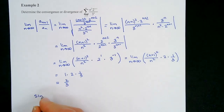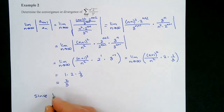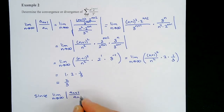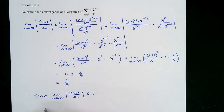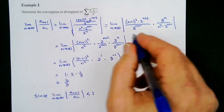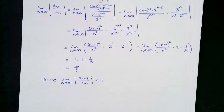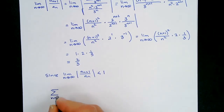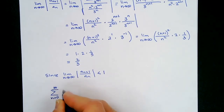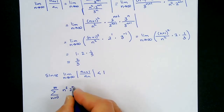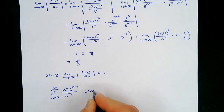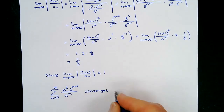So we can say: since the limit as n approaches infinity of |a_(n+1)/a_n| = 2/3, which is less than 1, the series sigma from n=0 to infinity of n² · 2^(n+1) / 3^n converges by the ratio test.